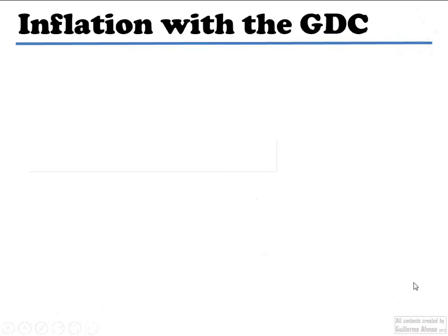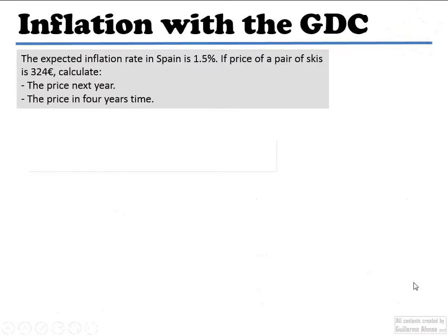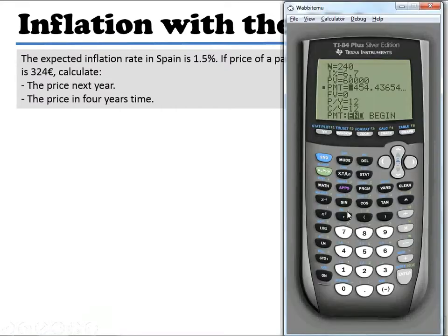I can also do inflation with a graphic display calculator. So here's an example. I get a pair of skis for 124. The question is, how much is that going to be worth next year? There's going to be some slight differences on how this works on my GDC. First of all, make sure payment per time period is going to be 0.